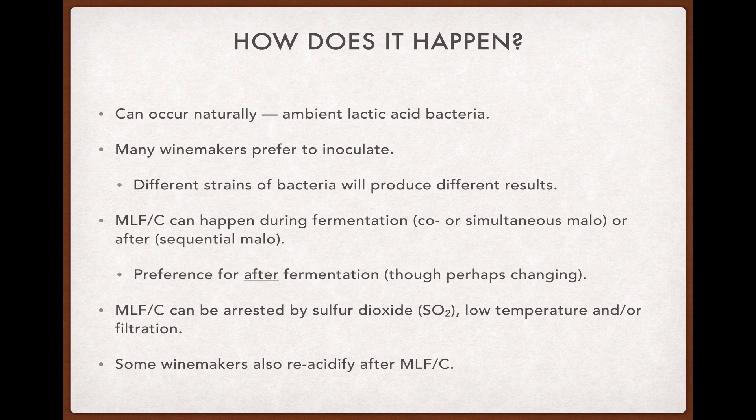Malolactic conversion can be arrested, prevented, or otherwise controlled by various means, including the use of sulfur dioxide — something that lactic acid bacteria are very sensitive to — by lowering the temperature of the wine or juice to suppress bacterial activity, and by filtering to remove lactic acid bacteria. Lastly, some winemakers will put a wine through malolactic conversion only to re-acidify it afterwards. While this might seem counterintuitive at first glance, keep in mind that a winemaker may want the sensory properties that mallow can contribute to her wine, but perhaps because the grapes were very ripe or for other reasons, the mallow left her wine with less acid than desirable.